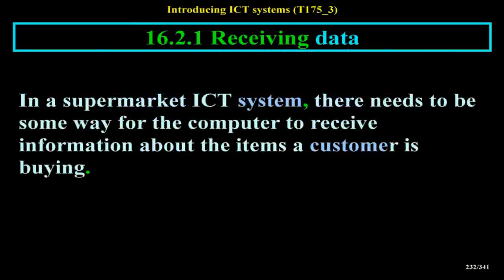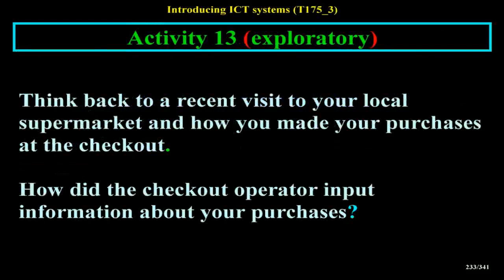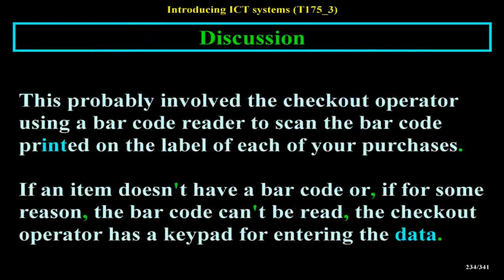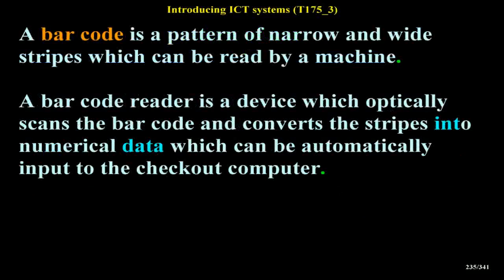Receiving Data: In a supermarket ICT system, there needs to be some way for the computer to receive information about the items a customer is buying. This probably involves the checkout operator using a barcode reader to scan the barcode printed on the label of each purchase. If an item doesn't have a barcode, or the barcode can't be read, the checkout operator has a keypad for entering the data. A barcode is a pattern of narrow and wide stripes which can be read by a machine, and a barcode reader optically scans it and converts the stripes into numerical data.